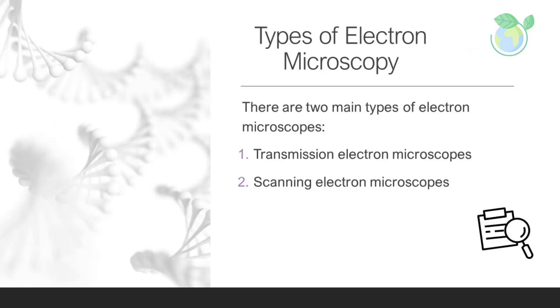There are two main types of electron microscopes: transmission electron microscopes (TEM) and scanning electron microscopes (SEM).